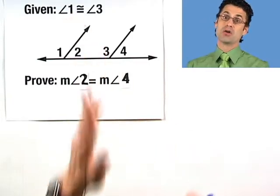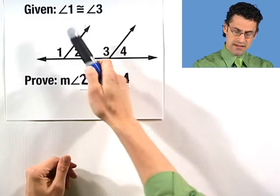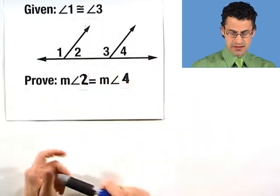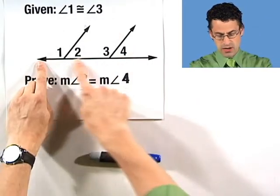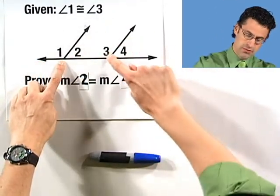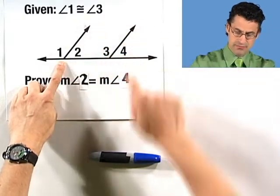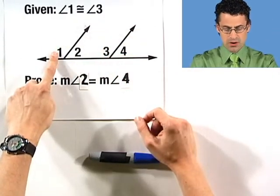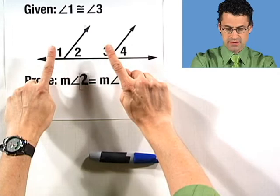Forget about the fact that we know there's a proof out there about to come on the scene. We're given that angle one is congruent to angle three. Notice what do we have here? We have one line and we have these two rays coming out. And I'm told that angle one is congruent to angle three. So that's what we're given.